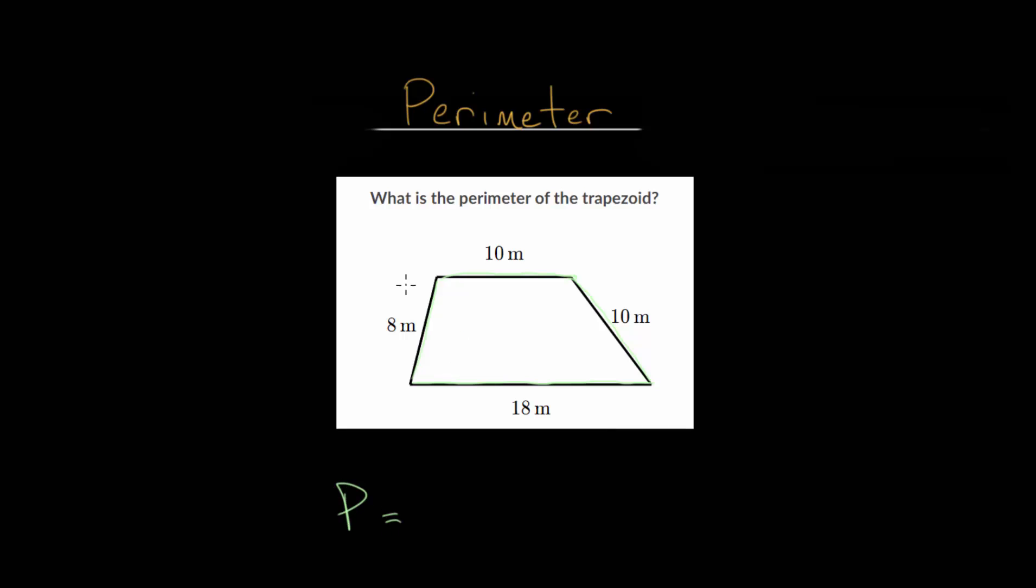So in this case, for our perimeter, we will take this 8 meter side, then add the 10 meter side, then the other 10 meter side, and lastly, the 18 meter side.